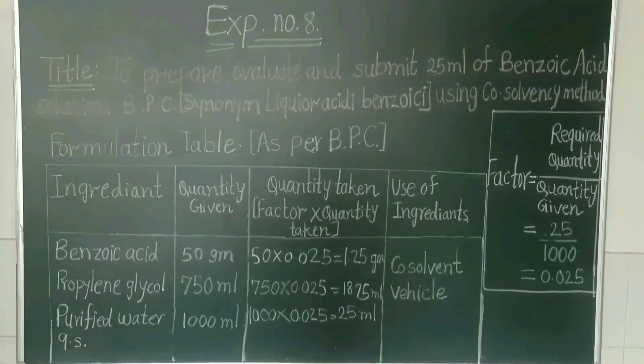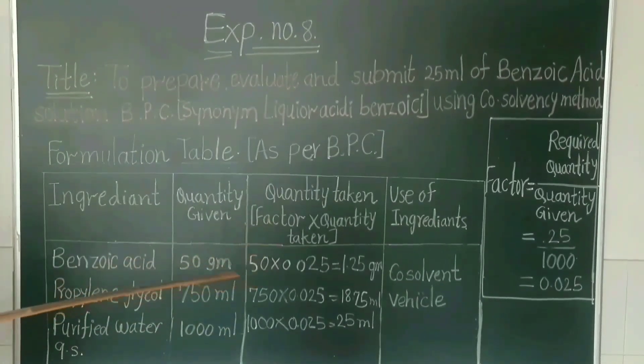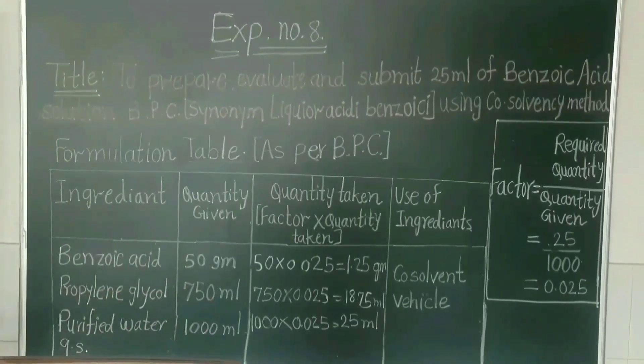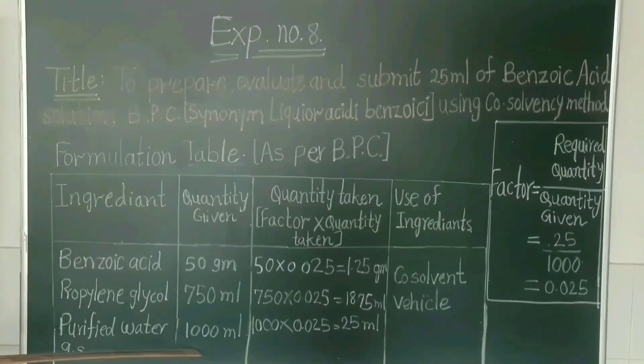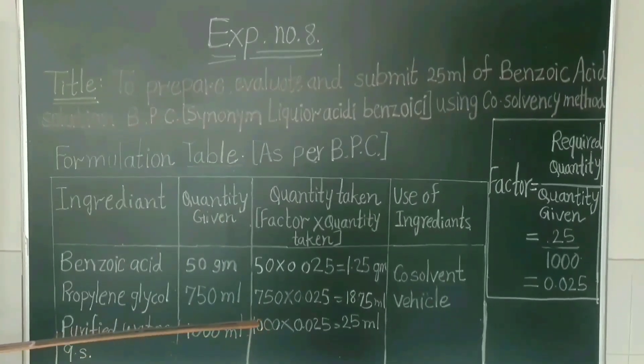We have to find out the factor for quantity taken. Factor equals required quantity divided by quantity given. Required quantity is 25 ml and given quantity is 1000 ml, so factor is 0.025.